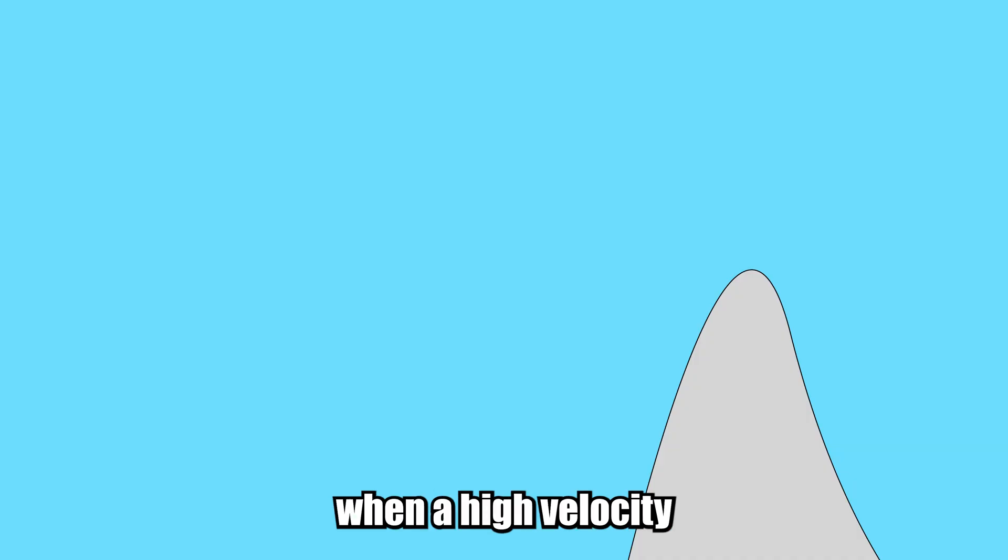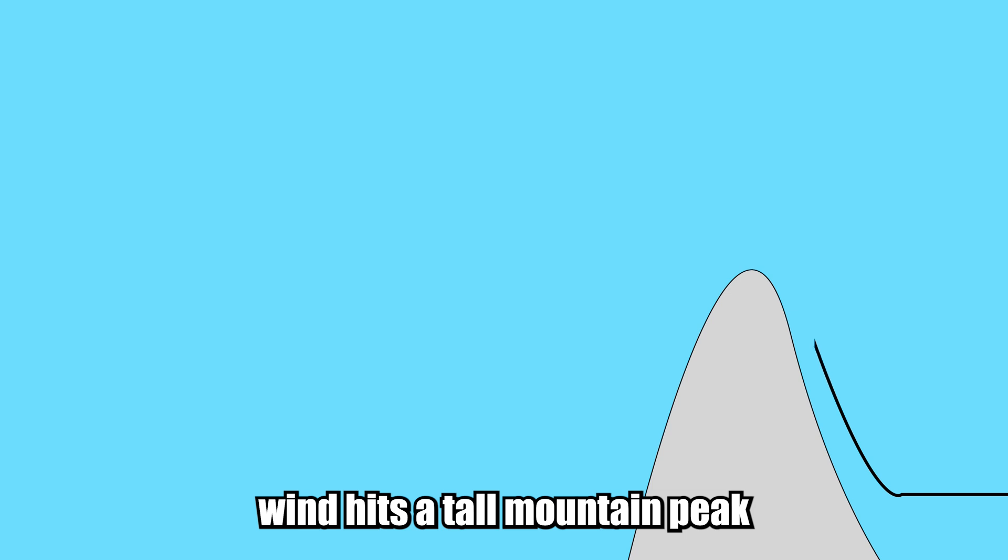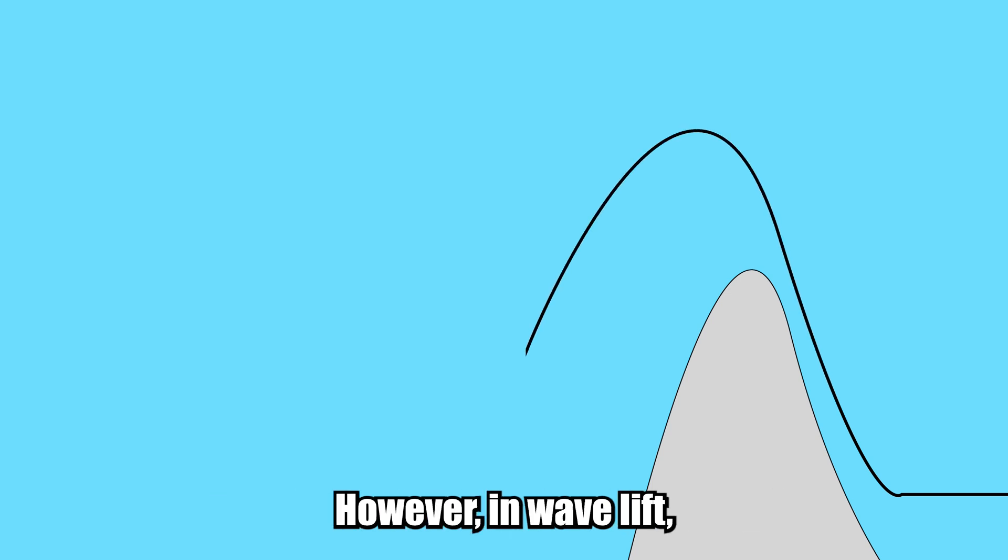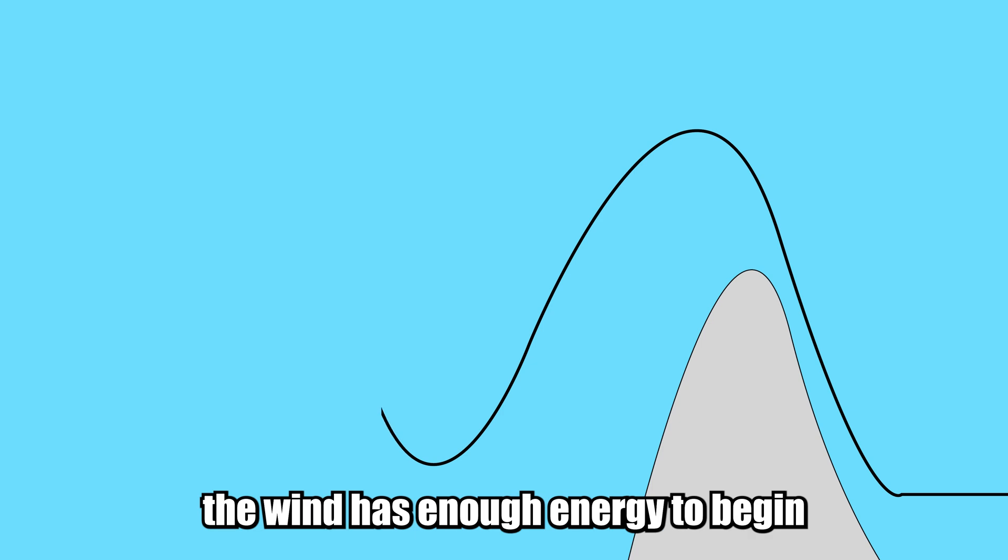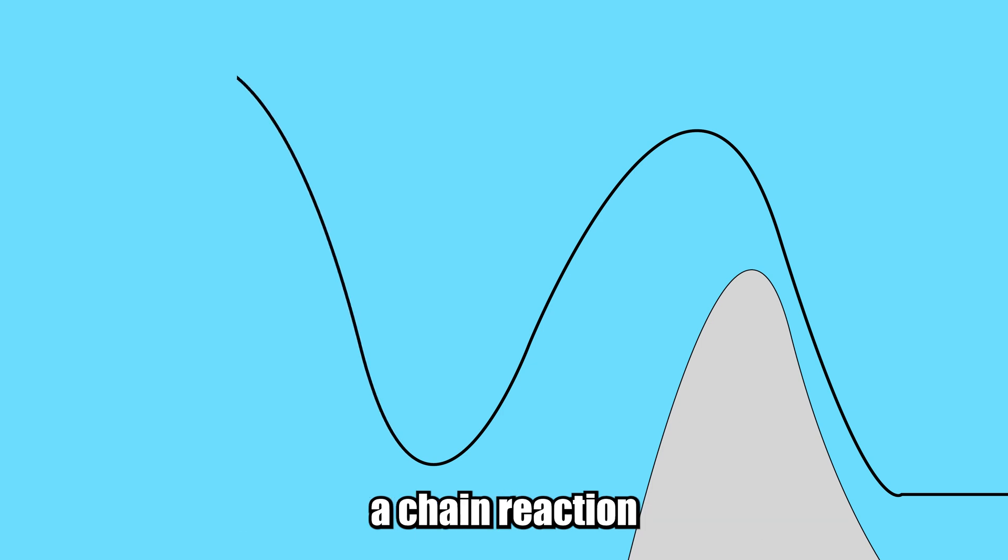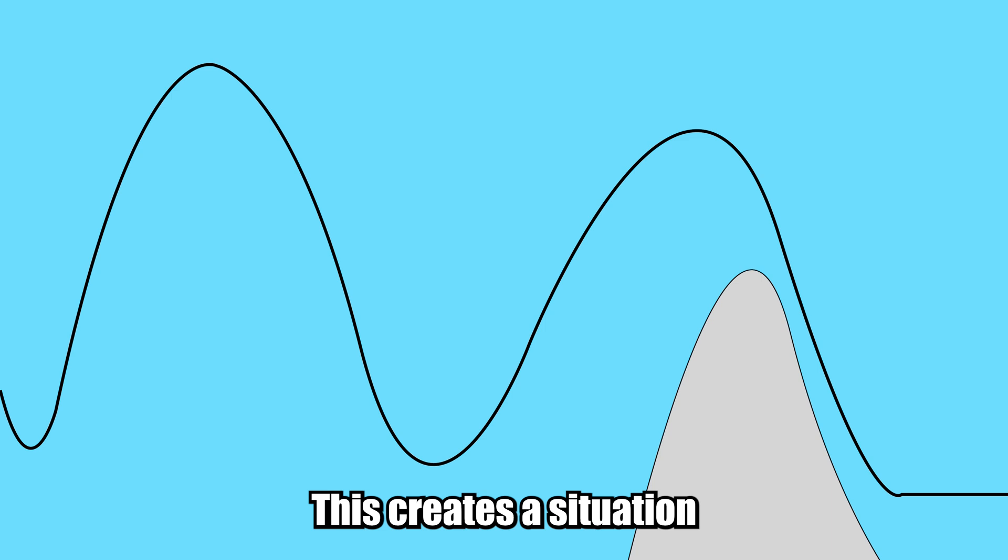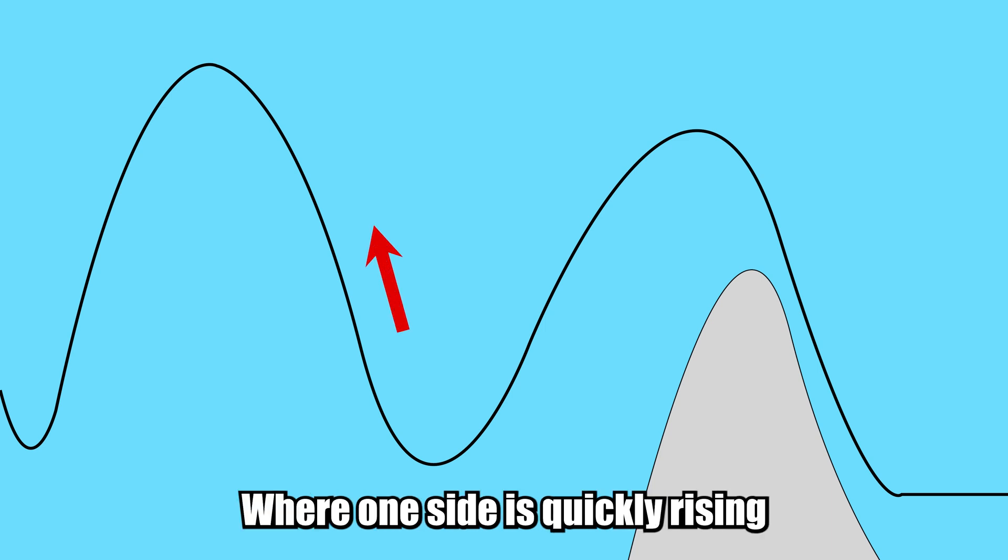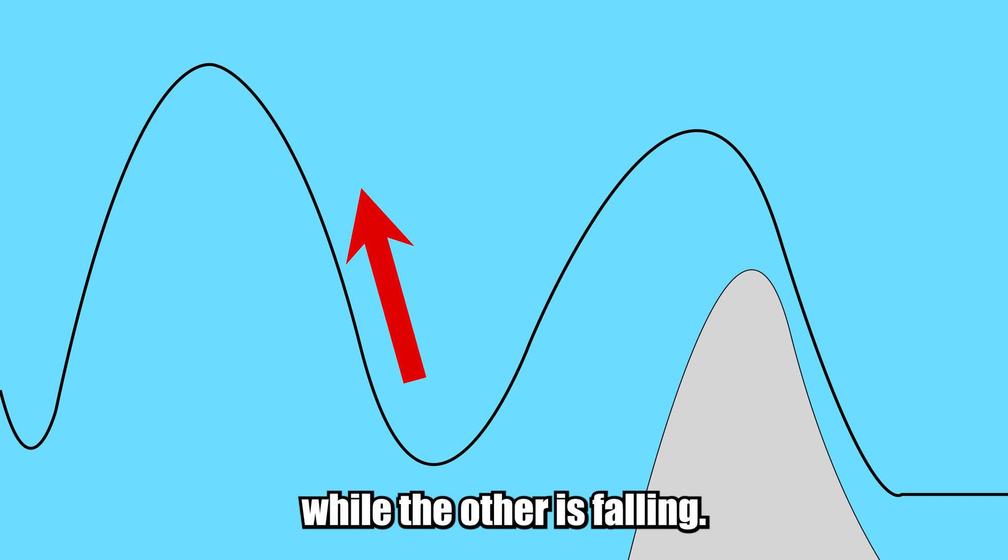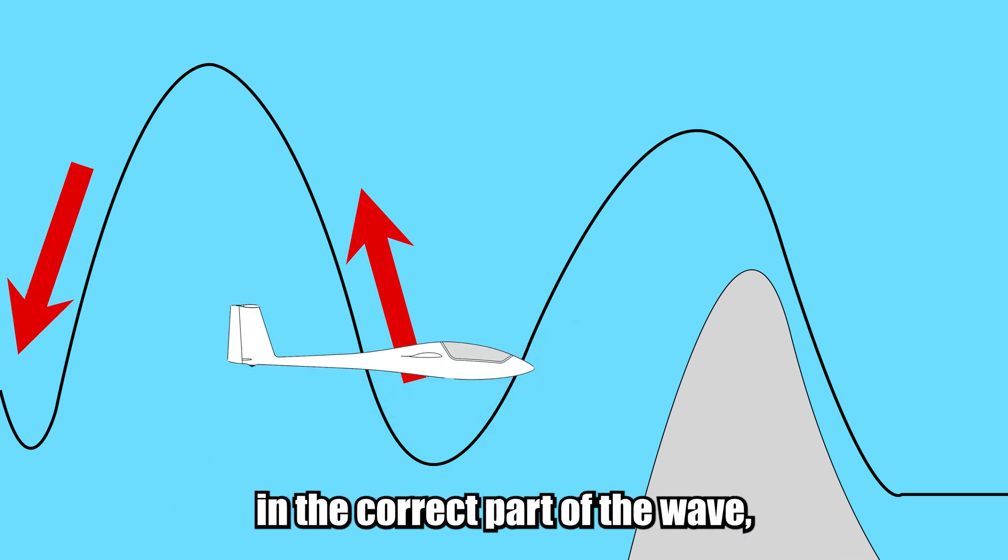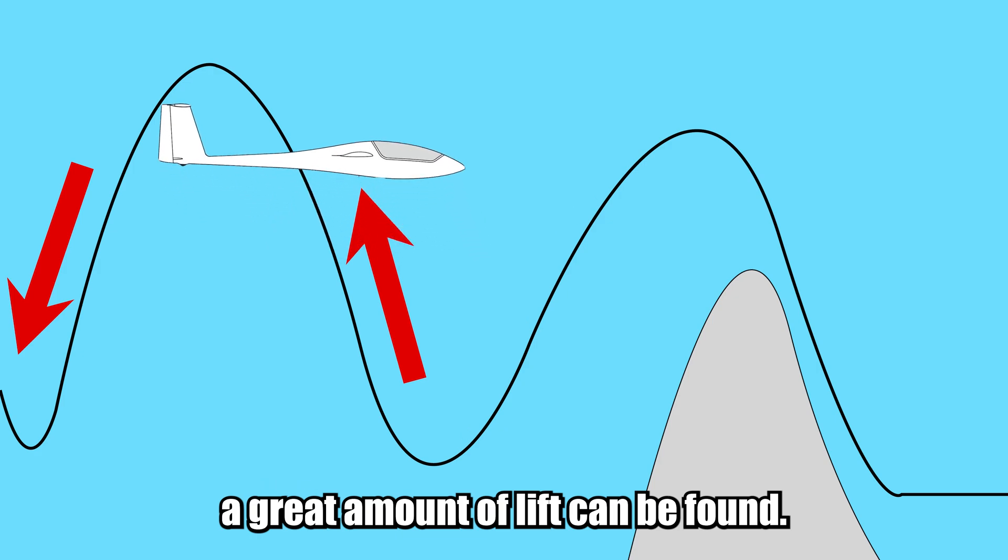Wave occurs when a high-velocity wind hits a tall mountain peak and is deflected upwards, similar to what happens in ridge lift. However, in wave lift, the wind has enough energy to begin a chain reaction of expansion and compression of the air. This creates a situation not unlike the swells you see on the ocean, where one side is quickly rising while the other is falling. If a pilot puts his aircraft in the correct part of the wave, a great amount of lift can be found.